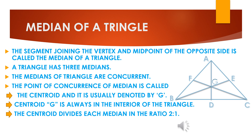Now we will see the median of a triangle. The segment joining the vertex and the midpoint of the opposite side is called the median of a triangle. So you can see in the diagram vertex A is joined with the midpoint D of side BC, so AD is a median. Similarly, vertex B is joined with the midpoint of side AC, so BE is a median, and CF is also a median. A triangle has three medians because there are three vertices.